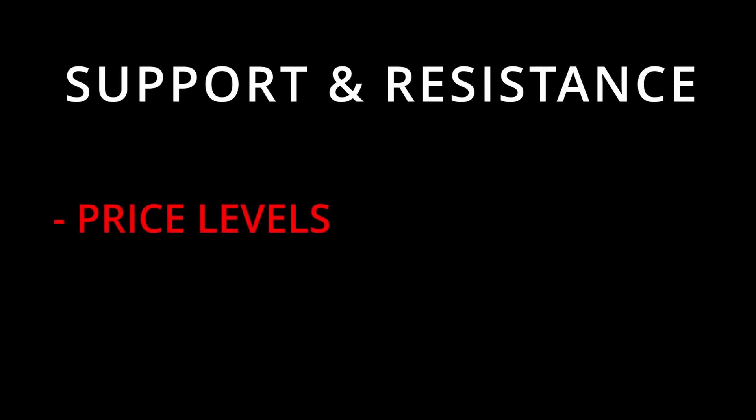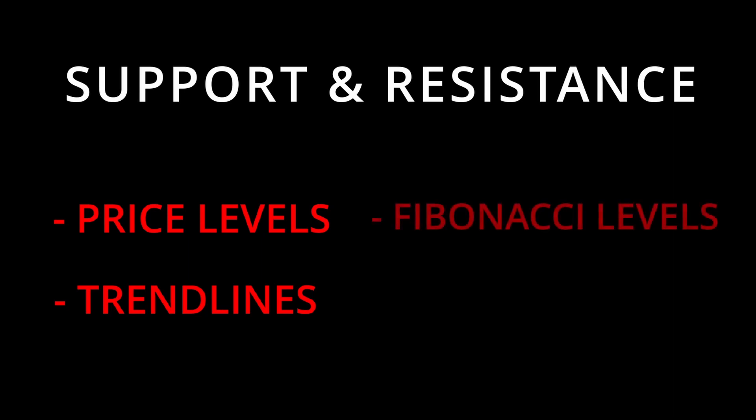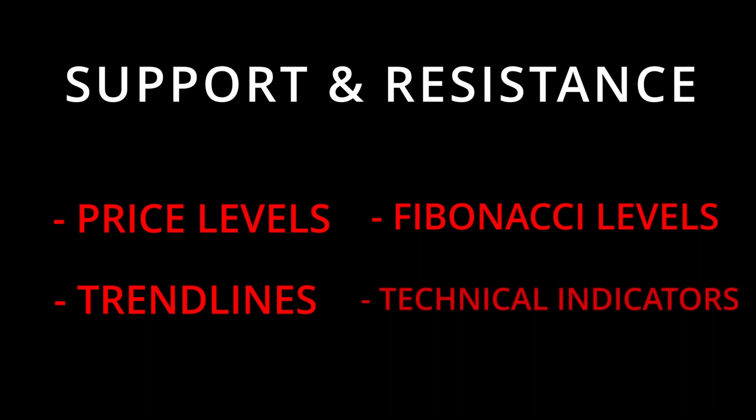The four most common types of support and resistance are: 1. Price levels — areas or zones where price has interacted on multiple occasions in the past. 2. Trend lines — one line below or above price action, or multiple as part of a pattern. 3. Fibonacci levels. 4. Technical indicators such as moving averages.